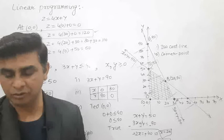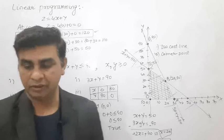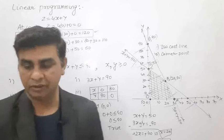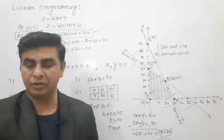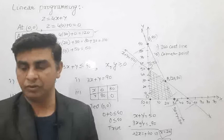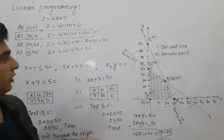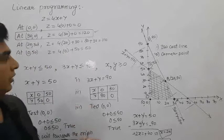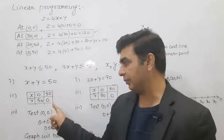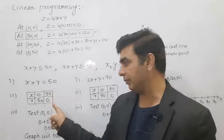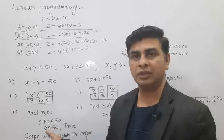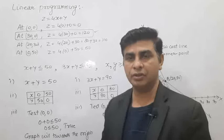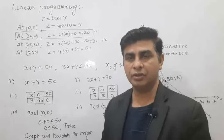The same process applies to other questions. The next question asks us to minimize z = 200x + 500y, subject to x + y ≥ 10, 3x + 4y ≤ 24, x ≥ 0, and y ≥ 0. In every question the same three steps apply: change inequality to equality, draw the table, and do the origin test — if true, shade towards the origin; if false, shade away from the origin.